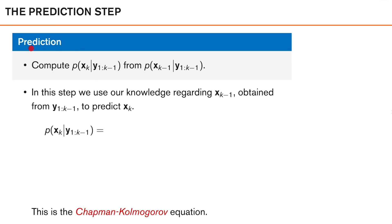Now we look at how to actually calculate the predicted density and the posterior density. We start with the prediction step, where we want the predicted density — the density of xk given all the past measurements — and we want to calculate this from our posterior density of xk minus 1 given all the past measurements. In this step we make use of our knowledge regarding our previous state xk minus 1, obtained from our previous measurements, in order to predict xk. We want to translate our old knowledge about our state to describe the state at the current time using this predicted density. We want to use our motion model p of xk given xk minus 1 together with our posterior density from the previous time instance in order to compute the predicted density.